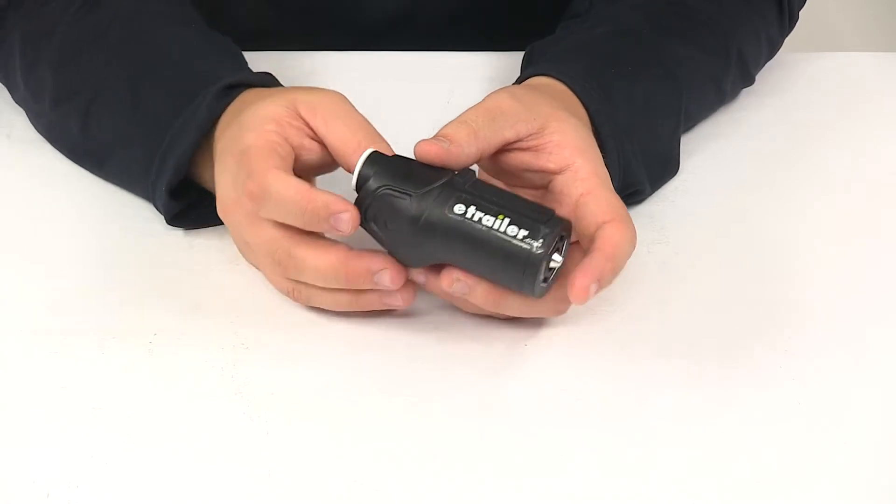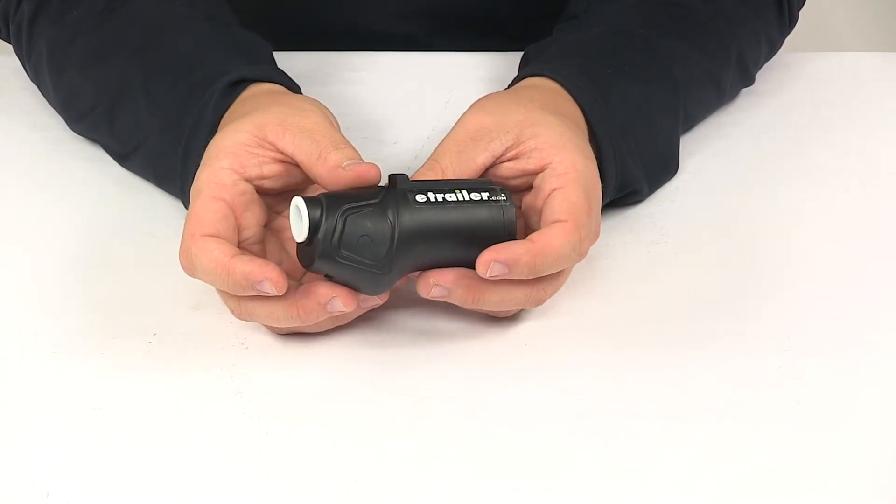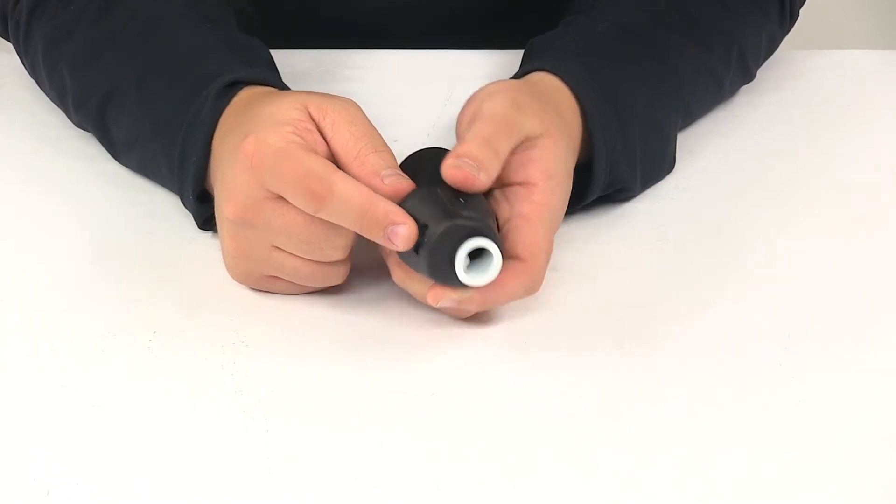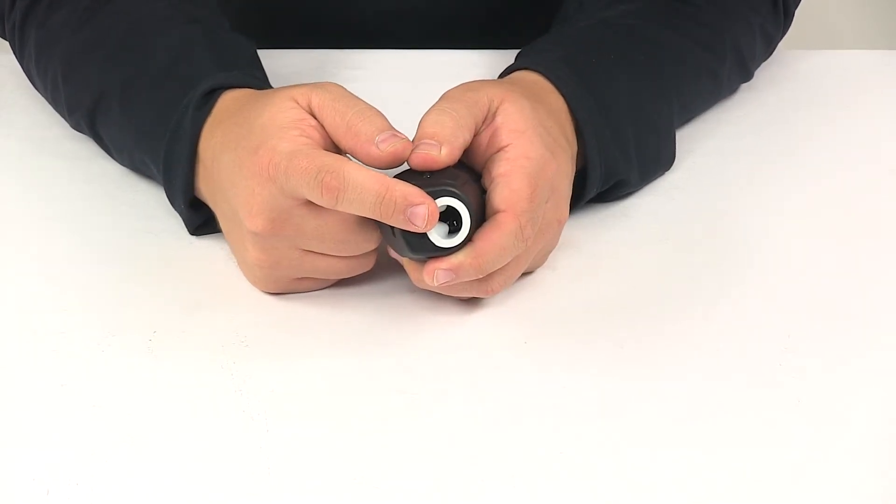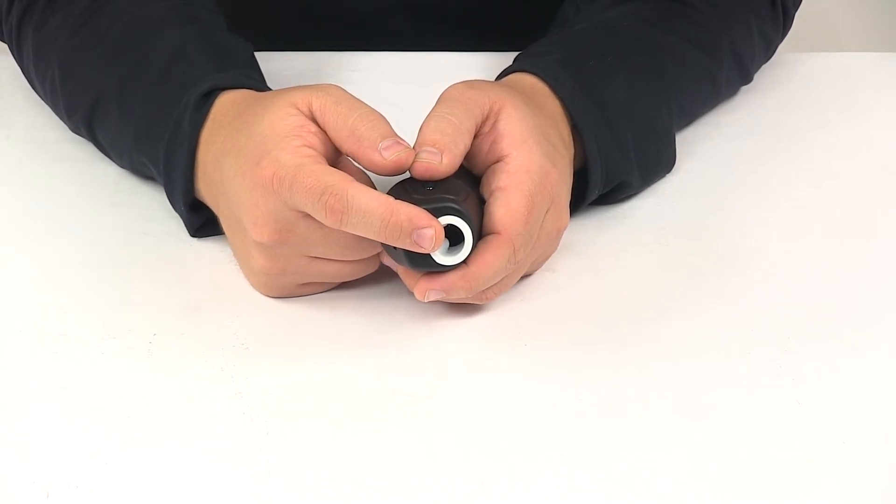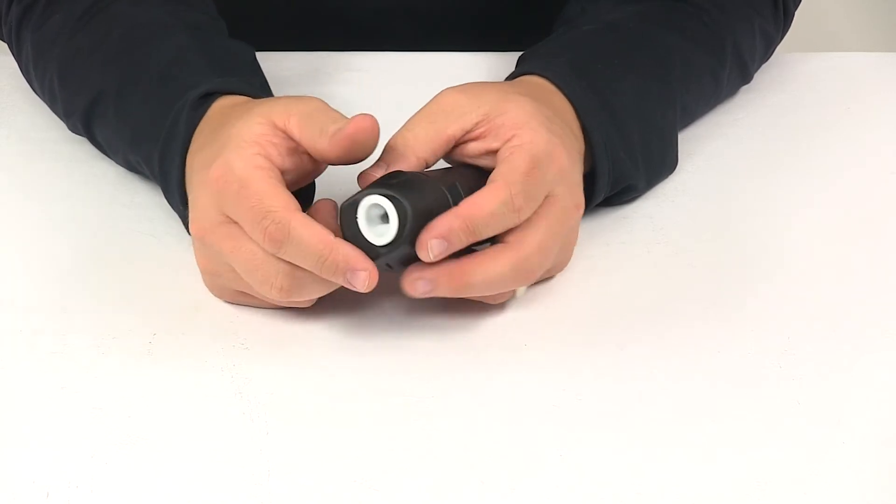Once you have everything connected you would reassemble the unit together and then located right here you would tighten this screw which creates a tight seal around the wiring and also functions as a strain relief bracket reducing the amount of stress placed on each connection terminal.